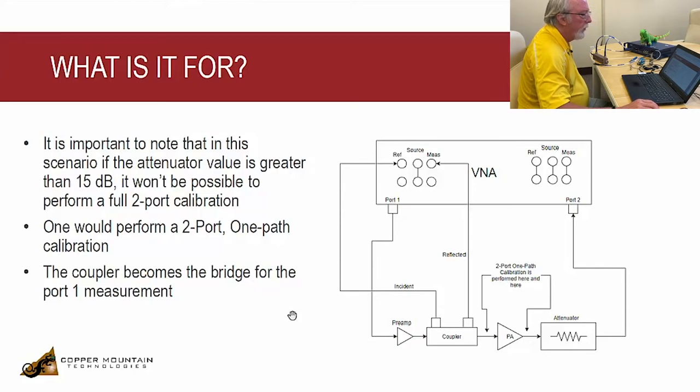Alright, so I've demonstrated how easy it is to do this. I've moved the bridge now outside the VNA and there are quite a number of applications for that which I will go over now. So in this case, as I mentioned before, I might have a preamp but I'm only interested in measuring the PA. So I would use this direct receiver access with this external coupler, the PA would be removed. And I would perform calibration between these two arrows, the output of the coupler and perhaps this side of the attenuator.